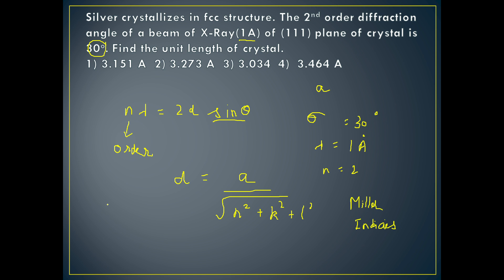Miller indices are the reciprocals of coordinates. For example, if a crystal has coordinates 1/2, 1/3, and 1 in the x, y, and z directions, taking reciprocals gives 2, 3, and 1 respectively — those are the Miller indices. So Miller indices are simply the reciprocal of the coordinates, and h, k, l represent them.